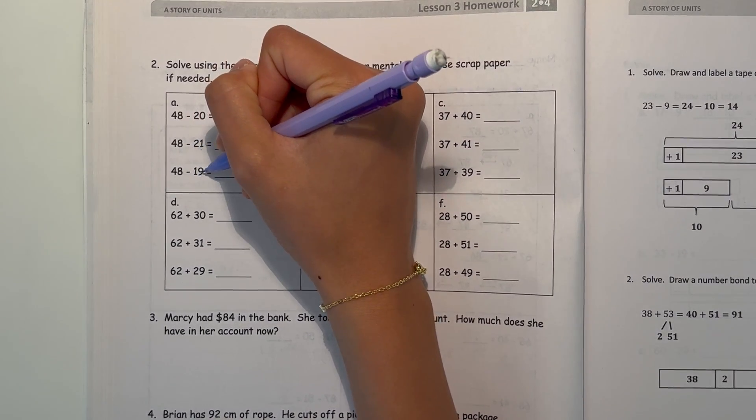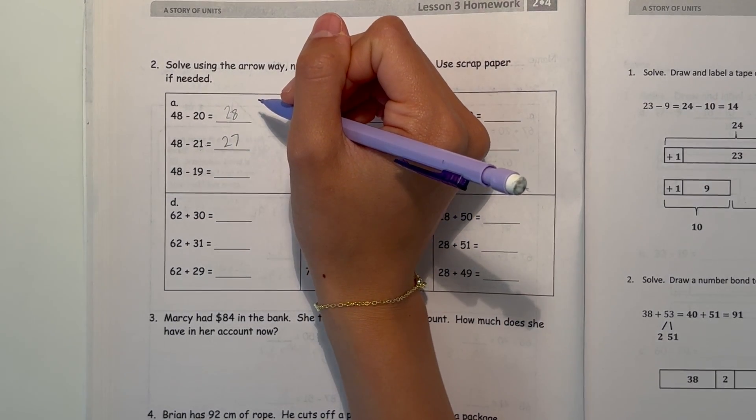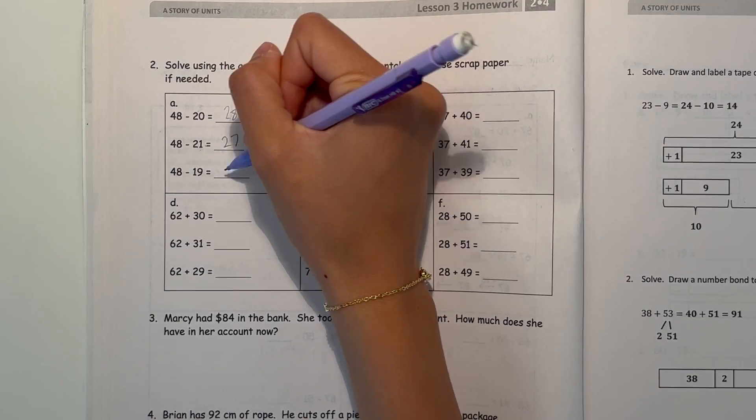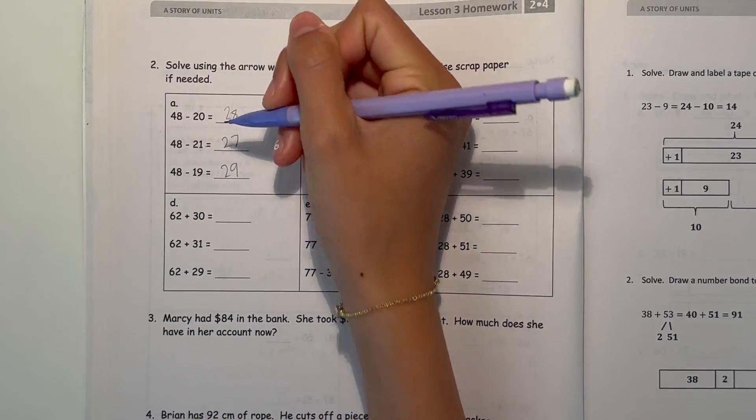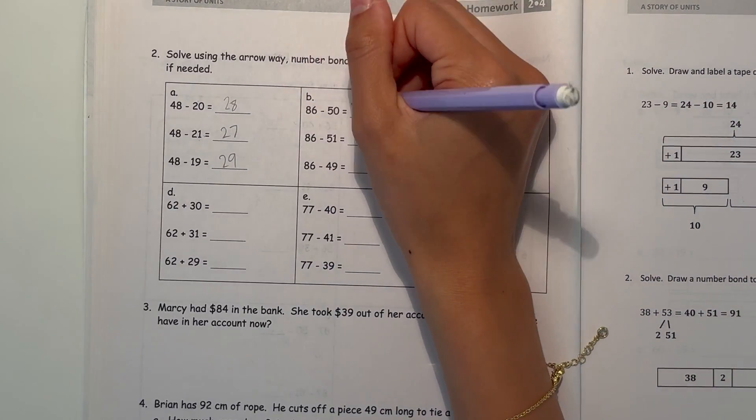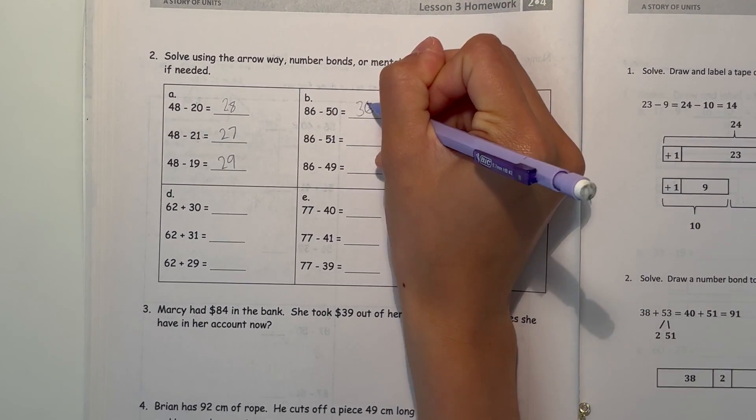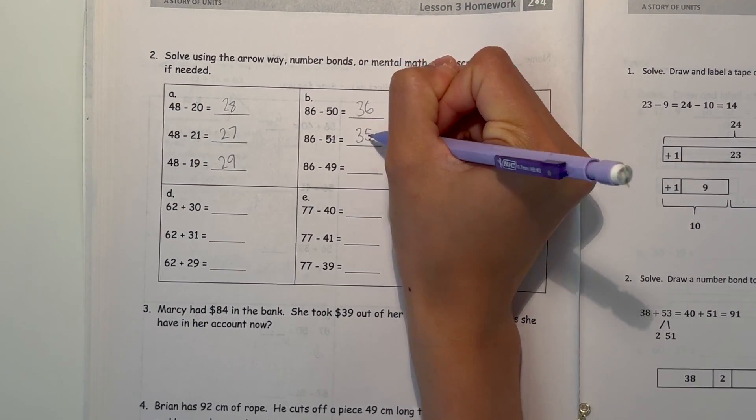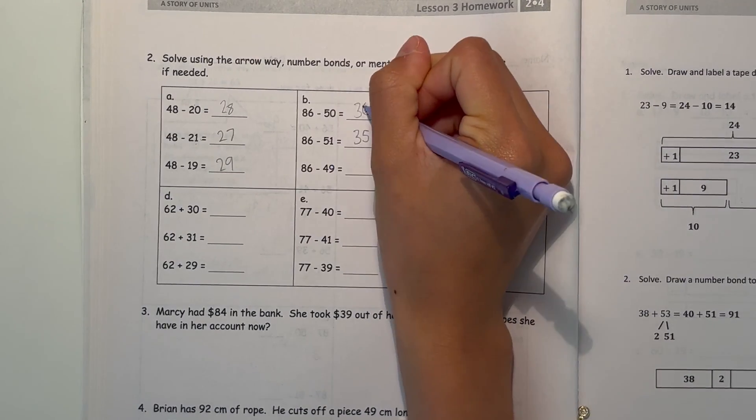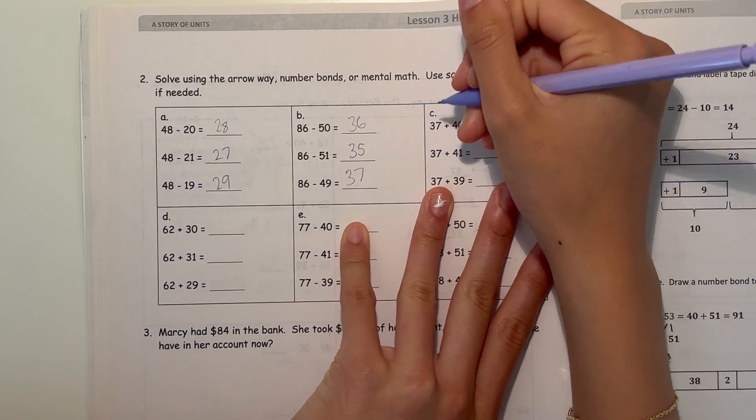And now 48 minus 19, you're subtracting one less than the original, so that should be 29, because it should be greater, because you're taking away less. And now B, 86 minus 50, that's 36. So if you're subtracting more, then this answer should be one less.